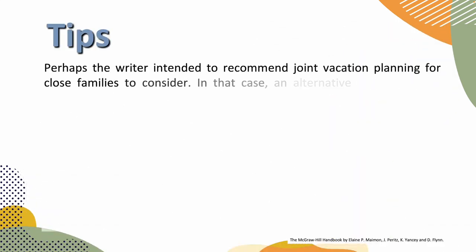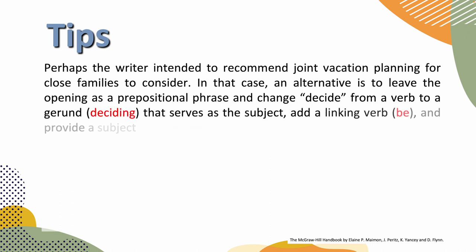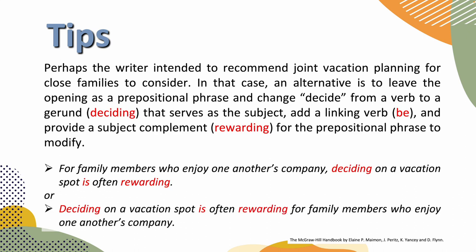Let's take a look at some tips. Perhaps the writer intended to recommend joint vacation planning for close families to consider. In that case, an alternative is to leave the opening as a prepositional phrase and change the subject to a gerund, 'deciding,' that serves as the subject. Add a linking verb — in this case, 'be' — and provide a subject complement, 'rewarding,' for the prepositional phrase to modify. So: 'For family members who enjoy one another's company, deciding on a vacation spot is often rewarding.'